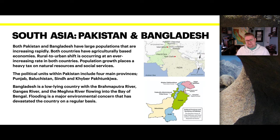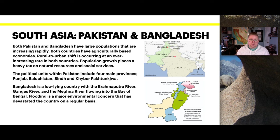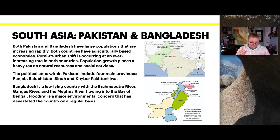Both Pakistan and Bangladesh have very large populations that are increasing rapidly, and both countries have agriculturally-based economies. A rural-to-urban shift is occurring at an ever-increasing rate in both countries, and population growth places an incredibly heavy tax on natural resources and social services. The political units within Pakistan include the four main provinces: Punjab, Balochistan, Sindh, and Khyber.